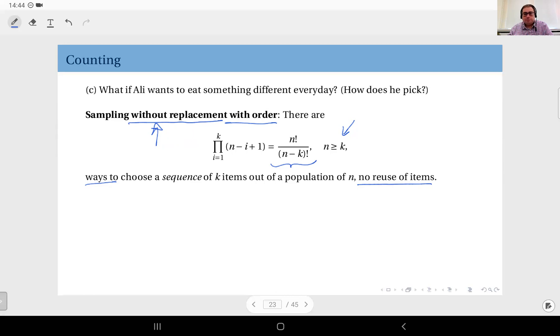If he wants to do that 11 days, it's impossible because he doesn't have an 11th option—he's going to run out of options. Therefore the population n should be greater than or equal to the length of the sequence or the number of choices.